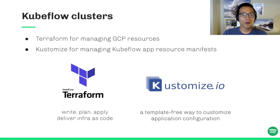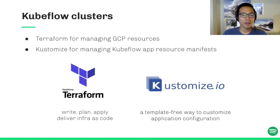Our Kubeflow clusters are built through the same process. The GCP resources are created and managed by Terraform, including GKE clusters, Cloud SQL instances, service accounts, and more. Terraform is a tool for building, changing, and versioning infrastructure, so the infrastructure can be treated as code. On the other hand, Kubeflow-related Kubernetes resources are organized by Kustomize and deployed through kubectl. Kustomize decomposes resource files into base and overlay files, which allows us to create a customization layer on top of the open source solution.